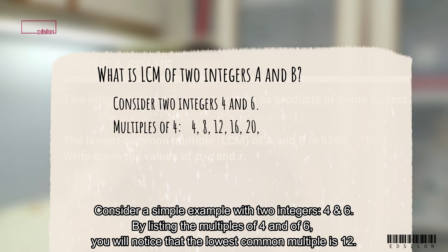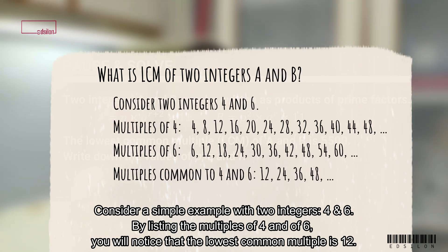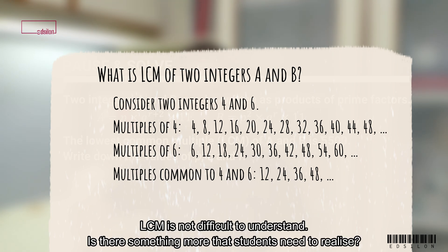Consider a simple example with two integers 4 and 6. By listing the multiples of 4 and of 6, you will notice that the lowest common multiple is 12.